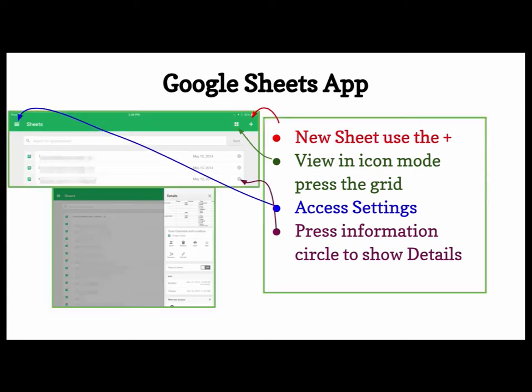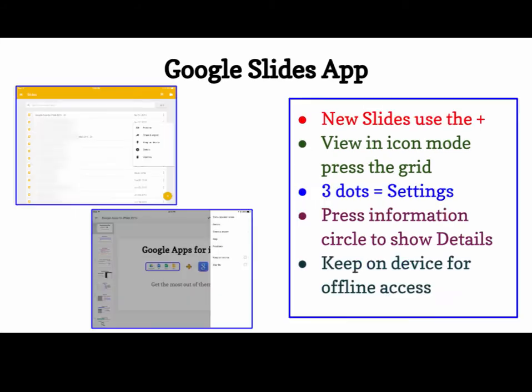Google Sheets is very similar. Use the plus sign for a new sheet. You can view in icon mode or grid view, access the settings, and press the information circle to show details.